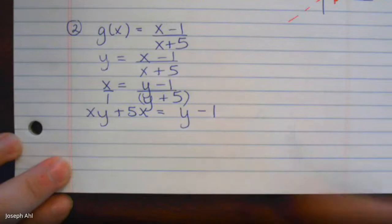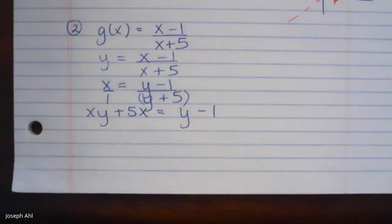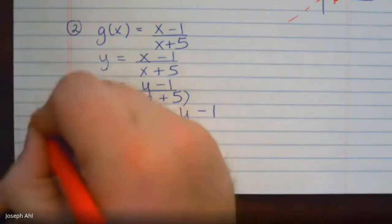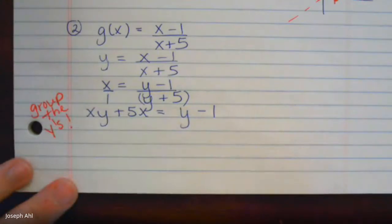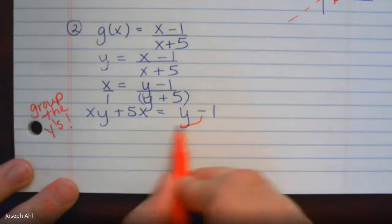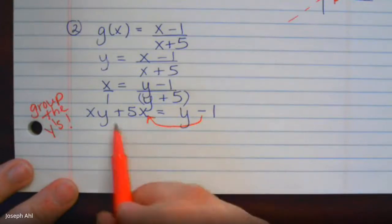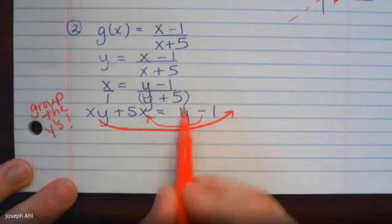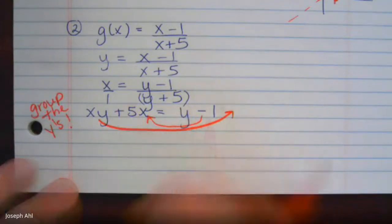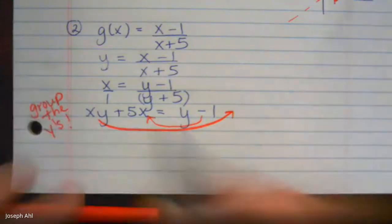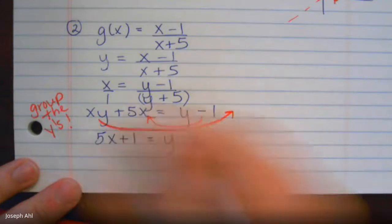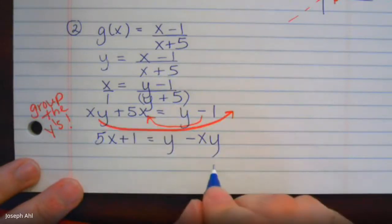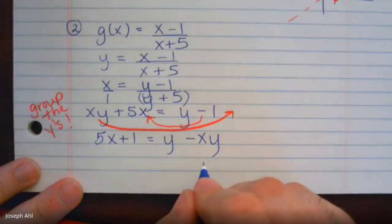At this stage, we want to solve for y, so we need to group the y terms together on one side. I'll add one to both sides and subtract xy, rearranging to get 5x + 1 on one side and y - xy on the other. Think about why we want to get those y's together on one side before I give you the answer.